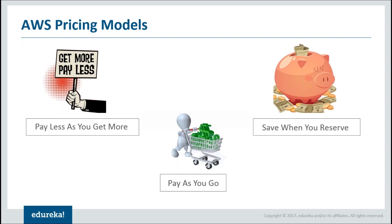Secondly, we have pay less as you get more. The more services you use as far as AWS is concerned, it charges you fairly less - you have a chance of saving up to 70% of your total cost. You also have something called save when you reserve. Now if you know how much resources and compute capacity you're going to use in the near future, you can go ahead and reserve these services in advance, and in that case AWS charges you fairly less compared to the other models.